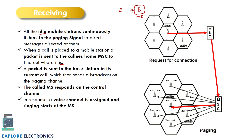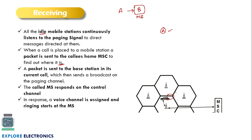That packet is sent to the base station in person B's current cell. Person A sends information to the MSC through the base station, and the MSC keeps broadcasting the information as a packet to the base station of person B's current cell. The mobile station responds to the control channel, a voice channel is assigned, and then the ring starts on person B's mobile phone. This is the process of reception that takes place while establishing a call.